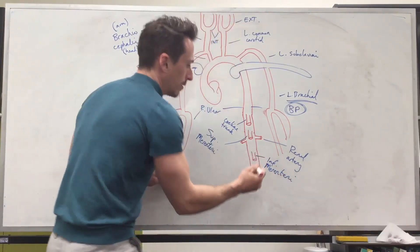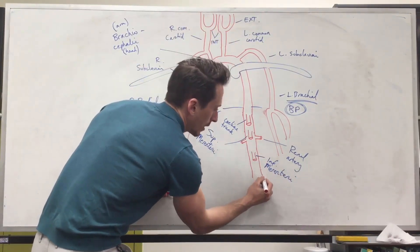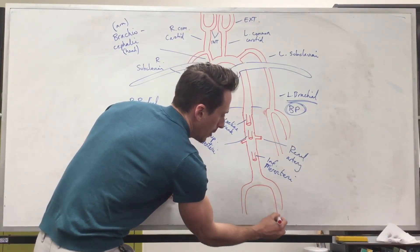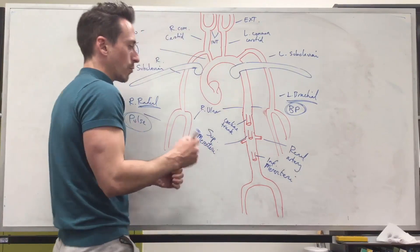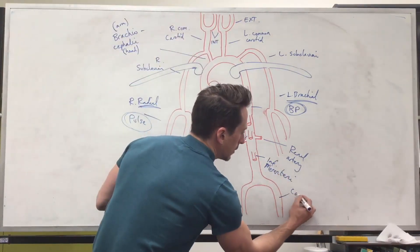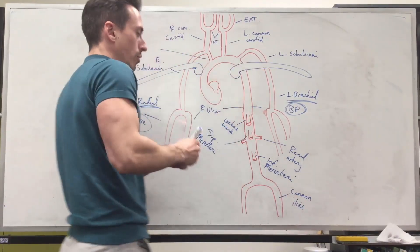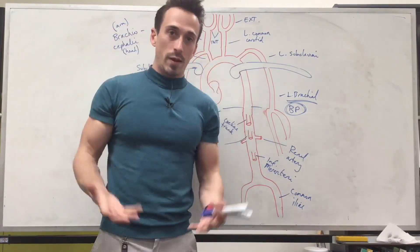Then as we go even further down we're going towards the legs now what we get is some branching off and now what we're getting is the common iliac arteries left and right, common iliac. And they're going to have various branches to them which is going to include the femoral artery.